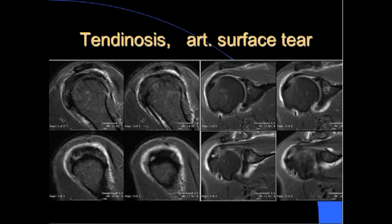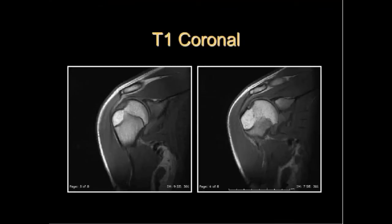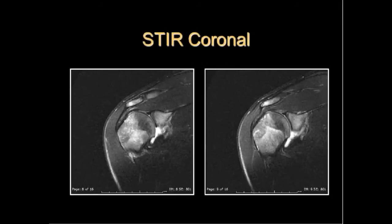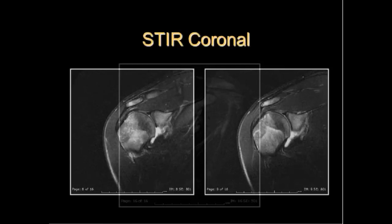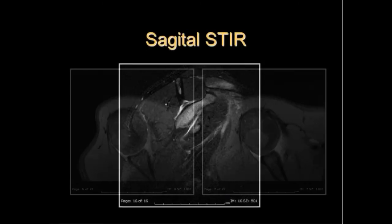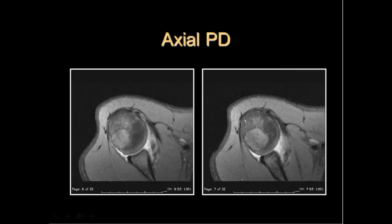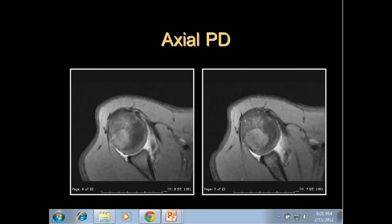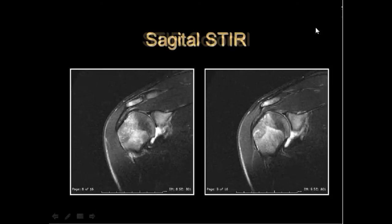So this is an articular surface tear, also called a rim-rent tear. Same patient - all these images have some finding or another.